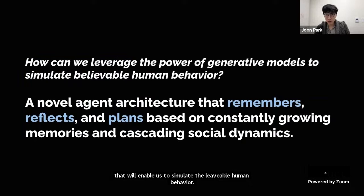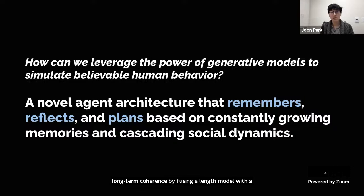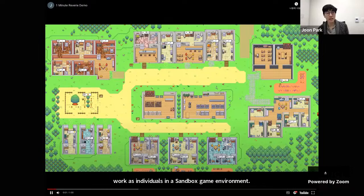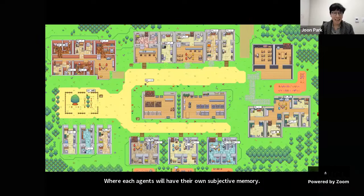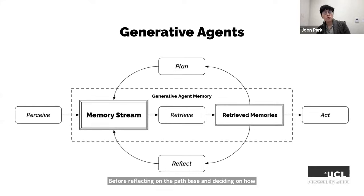Today I introduce a new way of simulating human behavior in fully general computational agents that can populate an open world like ours, while ensuring long-term coherence by fusing a language model with a novel agent architecture that remembers, reflects, and plans based on constantly growing memories and cascading social dynamics. These agents can plan a believable day in life as individuals in a sandbox game environment and come together to give birth to an entirely artificial society, where each agent has their own subjective memory and experience. I call these generative agents.